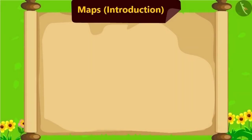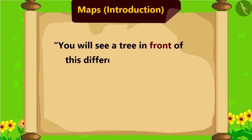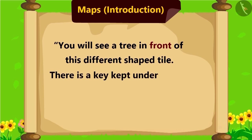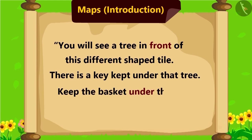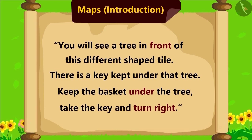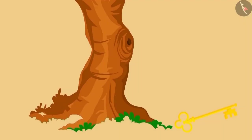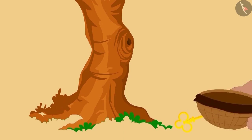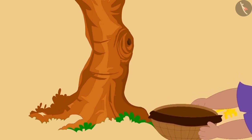Now Bablu read the instructions further: you will see a tree in front of this different shaped tile. There is a key kept under that tree. Keep the basket under the tree, take the key, and turn right. Bablu kept the basket under the tree and turned right as mentioned.